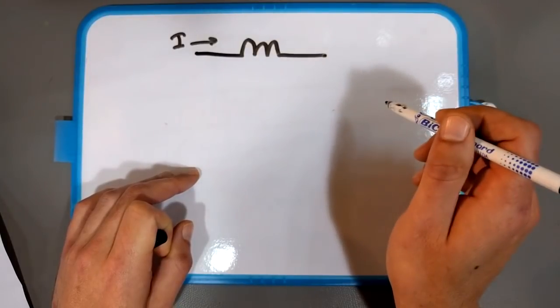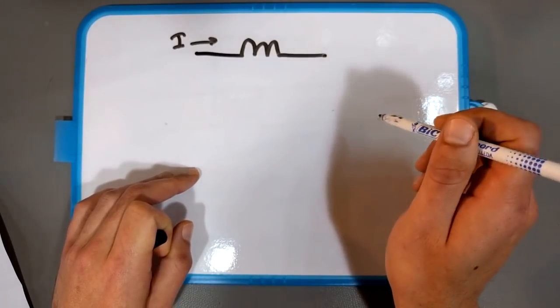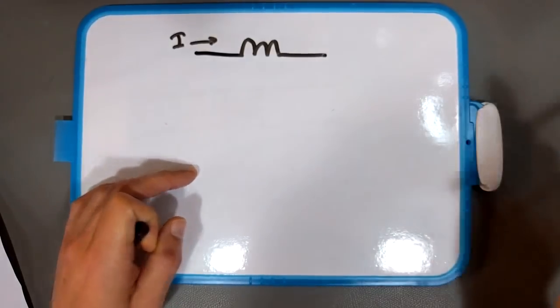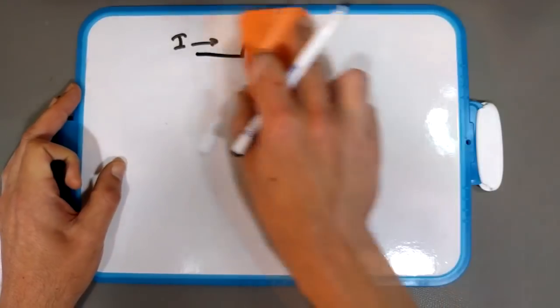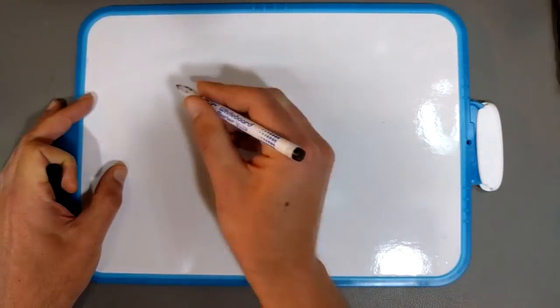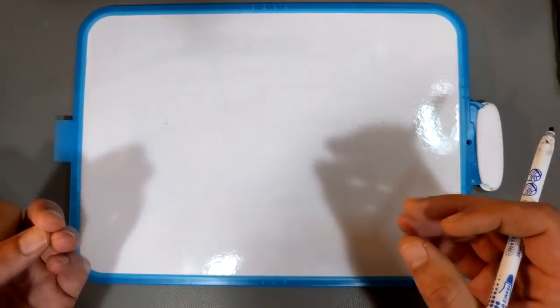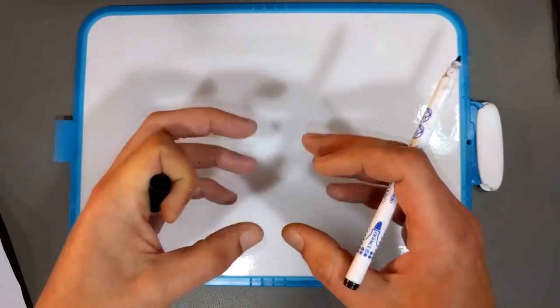And remember here that our ferrite choke is basically attenuating high frequency signals. So if we were to draw a quick schematic of what it looks like, a circuit diagram of putting a ferrite choke on a cable.